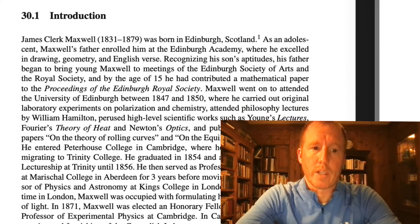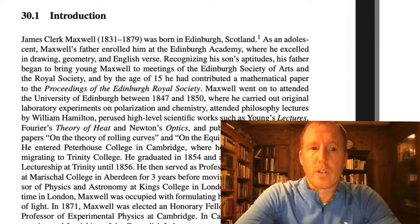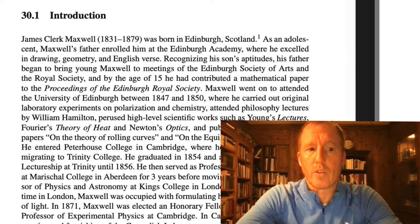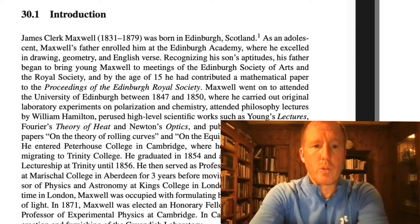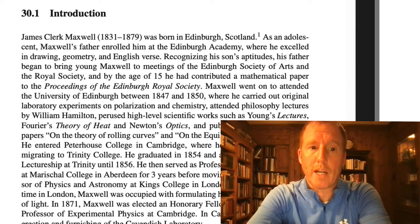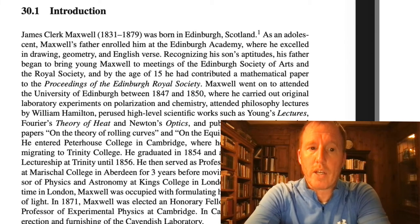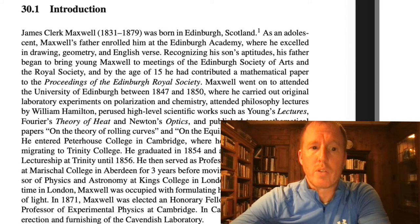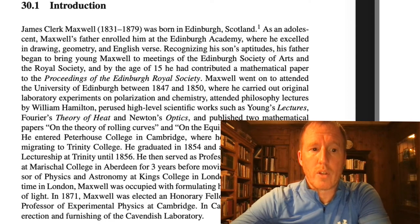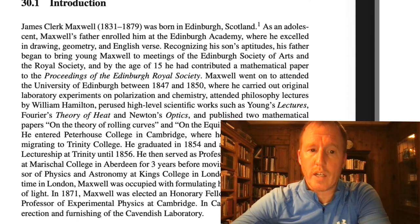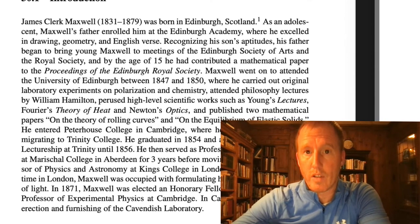James Clerk Maxwell was born in 1831 in Edinburgh, Scotland. As an adolescent, Maxwell's father enrolled him at the Edinburgh Academy, where he excelled in drawing, geometry, and English verse. Recognizing his son's aptitudes, his father began to bring young Maxwell to meetings of the Edinburgh Society of Arts and the Royal Society. And by the age of 15, he had contributed a mathematical paper to the proceedings of the Edinburgh Royal Society.